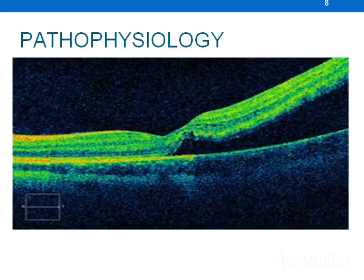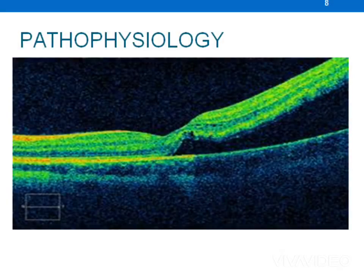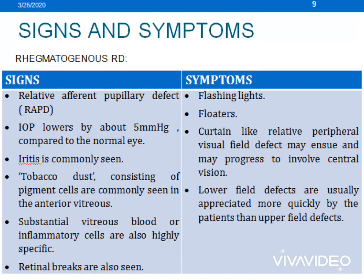Regarding pathophysiology, the retinal pigmented epithelium is able to maintain adhesion with the overlying neurosensory retina through a variety of mechanisms. Retinal detachment occurs when sub-retinal fluid accumulates between the neurosensory retina and the RPE. It usually occurs in three ways: the occurrence of a break, the formation of a proliferative membrane, and the accumulation of sub-retinal fluid.